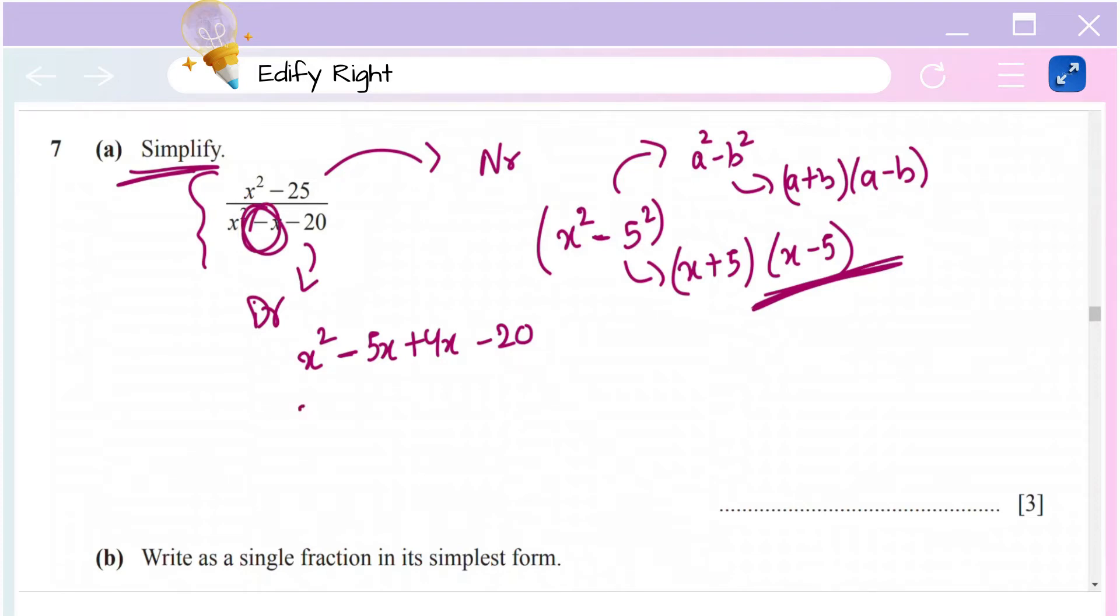Let's take common. That is x(x - 5) + 4(x - 5), which equals (x + 4)(x - 5). This is the denominator.